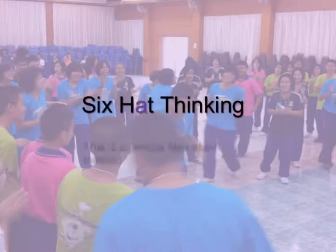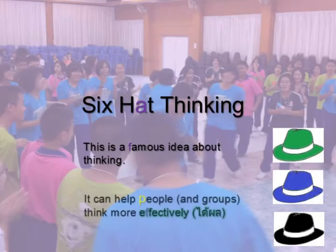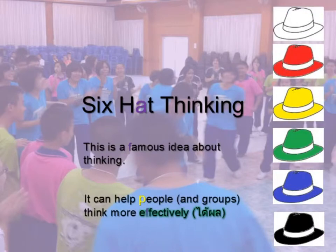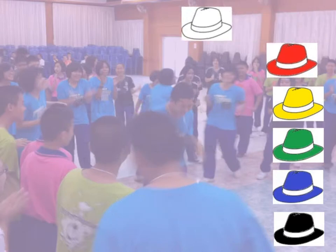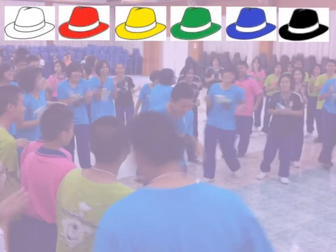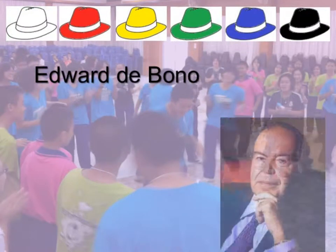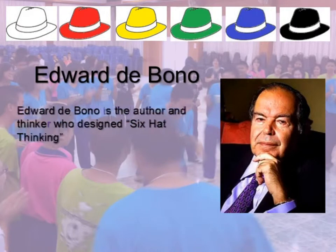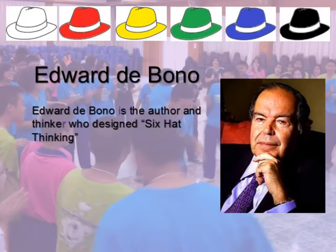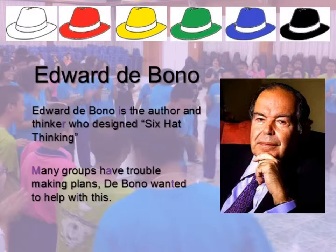Hey everyone, we're going to talk about Six Hat Thinking. This is a system that can help groups of people work together to think more effectively. The guy behind it all is Edward de Bono, an author and thinker. His idea was that many groups have trouble making plans because people's ideas get in the way of each other, and he wanted to help organize this.